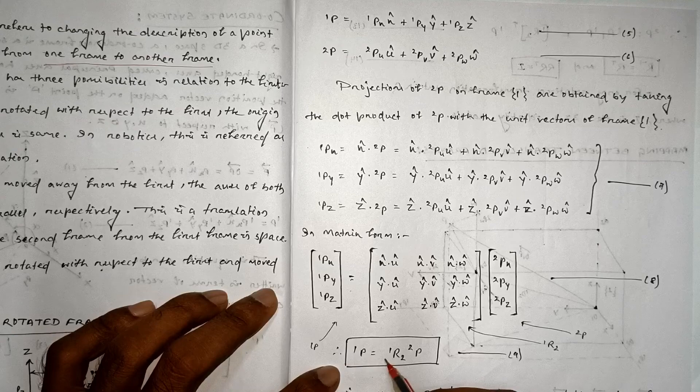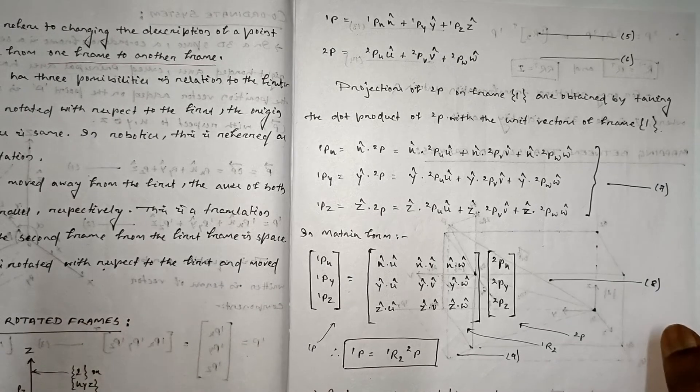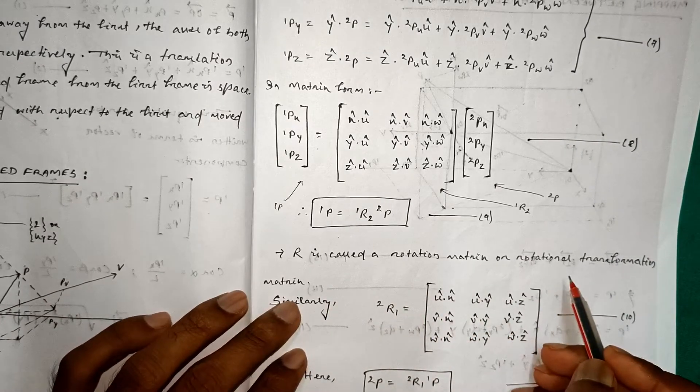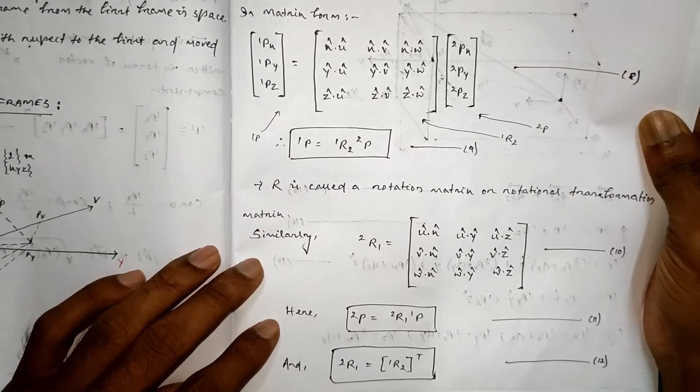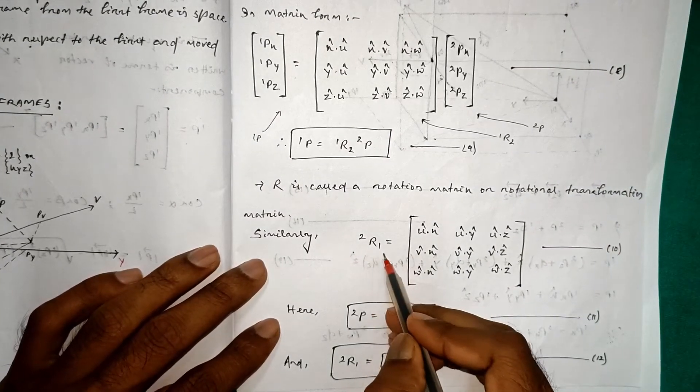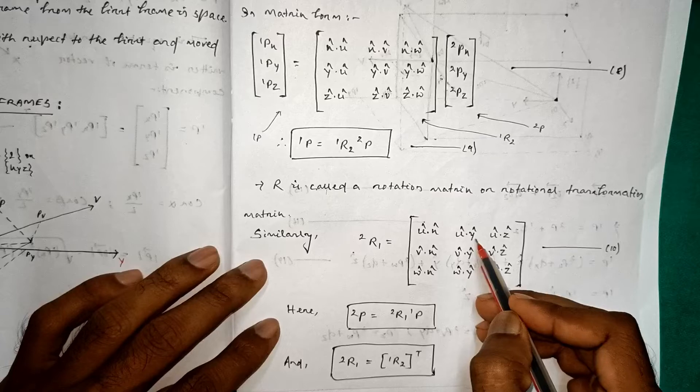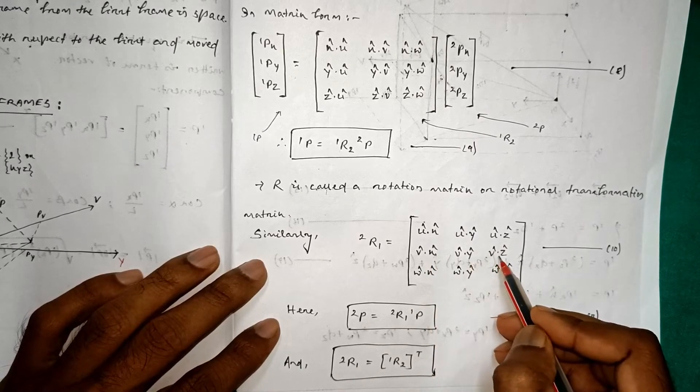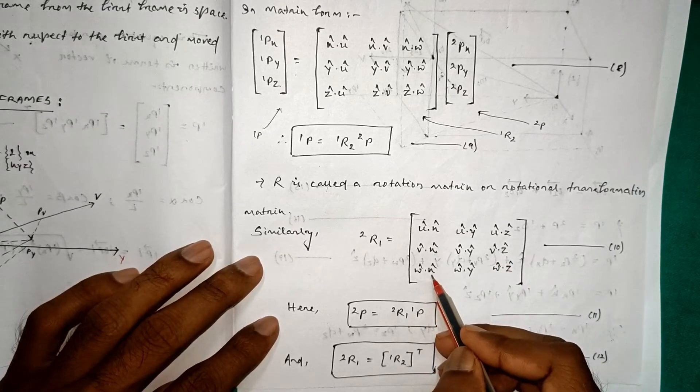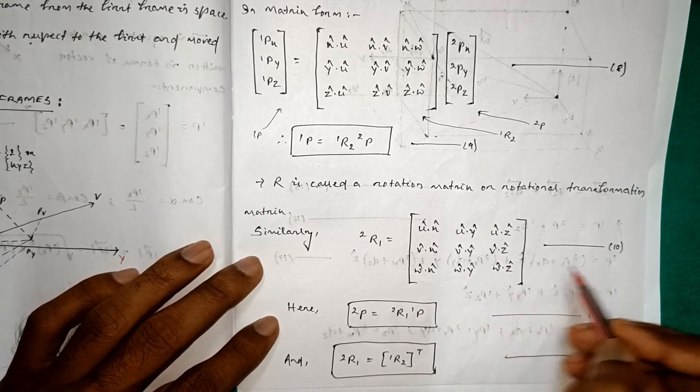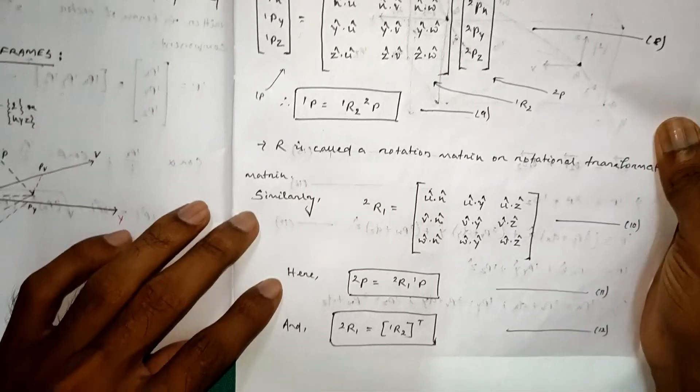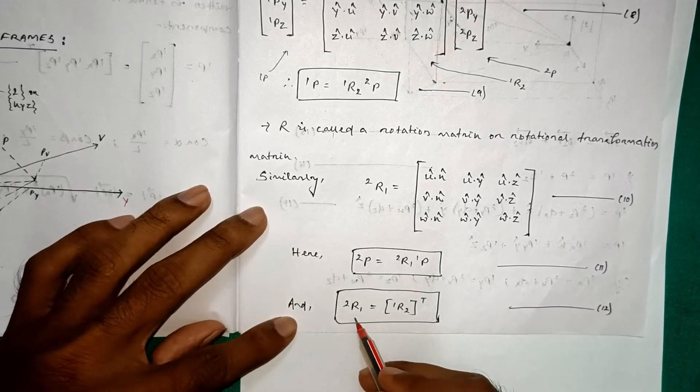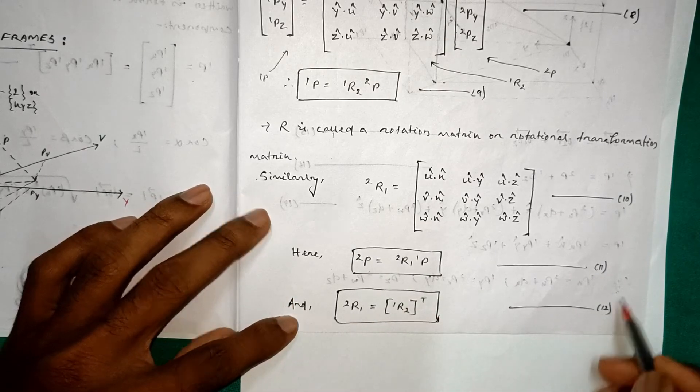So we will get 1P is equal to 1R2 2P, this is equation number 9. Where R is called a rotation matrix or rotational transformation matrix. Similarly we will see 2R1 is equal to u cap x cap, u cap y cap, u cap z cap, v cap x cap, v cap y cap, v cap z cap, w cap x cap, w cap y cap, w cap z cap. This is our equation number 10. Here 2P is equal to 2R1 1P, this is equation number 11, and 2R1 equal to 1R2 transpose, this is equation number 12.